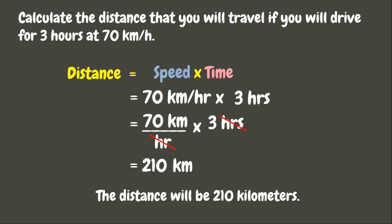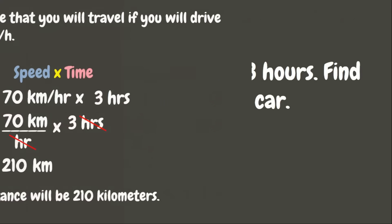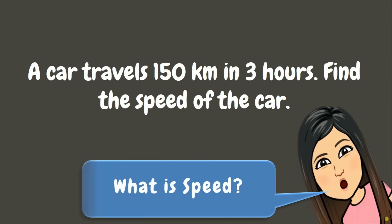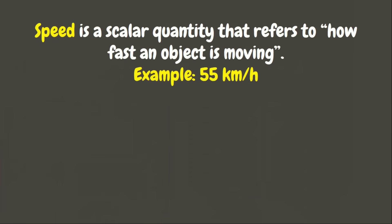Now, let's go to our next problem. A car travels 150 kilometers in 3 hours. Find the speed of the car. This time, we are looking for the speed. Now, what is speed? Speed is a scalar quantity that refers to how fast an object is moving. For example, we have 55 kilometers per hour.